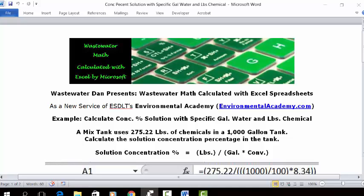Today's example: calculate concentration percentage solution with specific gallons of water and pounds of chemical. Today's problem reads, a mix tank uses 275.22 pounds of chemicals in a 1,000 gallon tank.